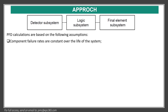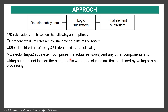Here I explain the approach. We have a detector subsystem, a logic subsystem, and a final element subsystem. The probability of failure on demand is based on the following assumptions: component failure rates are constant over the life of the system. The global structure of the SIF is described as follows: the detector input subsystem comprises the actual sensor or any other components and wiring, but does not include the component where signals are first combined by voting or other processing.